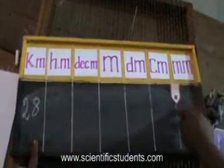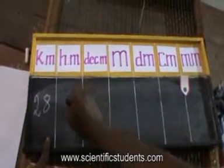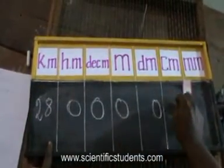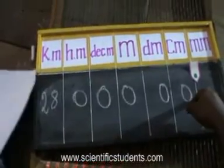Now we change kilometer into centimeter, now this flap goes to this area, this is the point. Now these places are no values, so we put zero. Now the answer is 28 lakhs centimeter is the answer.